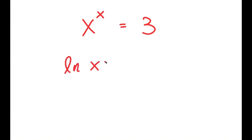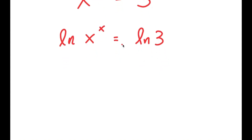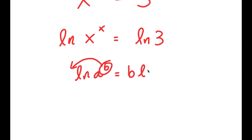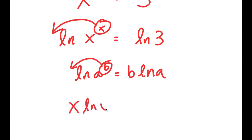So I get ln of x to the power of x is equal to ln of 3. An important property of logarithms is that if I have something in the form ln a to the power of b, I can move this exponent b to the front, so this turns into b times ln a. In this case, I have ln x to the power of x, and I can move x to the front, so I get x times ln x is equal to ln 3.